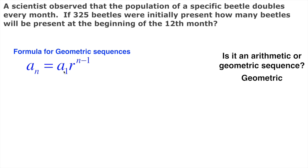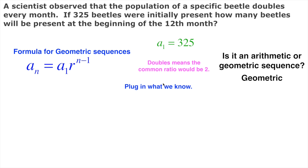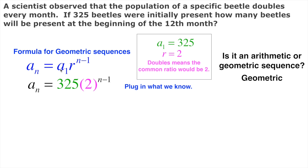This is the generic formula. A(1) is the first term — we know that one, that's 325. N is whatever term we want, and R is the common ratio. So let's plug in what information we know. A(1) is 325, that's how much we started with. R is our common ratio, and since the population is being doubled, the common ratio is 2 — we're multiplying by 2 every time. So we now have a formula specific to this problem.